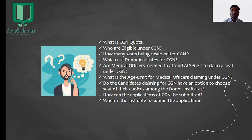These are some of the FAQs I would like to answer today: What is CGN quota? Who are eligible under it? How many seats are reserved for it? Which are the donor institutes for CGN? Are medical officers needed to attend a PGT to claim a seat under CGN? What is the age limit for MOs claiming under CGN? Do candidates claiming for CGN have an option to choose a seat of their choice among the donor institutes? How can applications for CGN be submitted? When is the last day to submit the application?